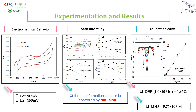The electrochemical behavior of flubendiamide was studied using cyclic voltammetry. The voltammogram recorded on the graphite carbon electrode showed the presence of two peaks: a cathodic peak near -200 millivolts and an anodic peak observed at 115 millivolts. This peak increased linearly with the square root of the scan rate with a correlation coefficient of 0.99, confirming that the reactions of flubendiamide are purely electrochemical and the transformation kinetics are controlled by diffusion.